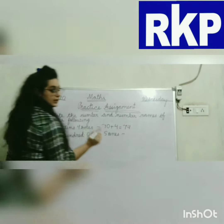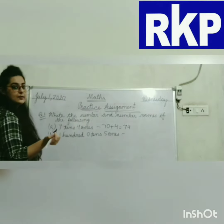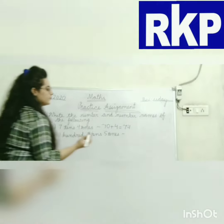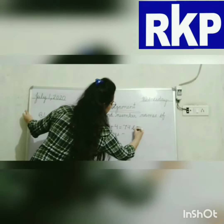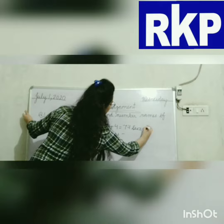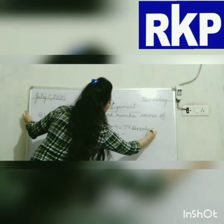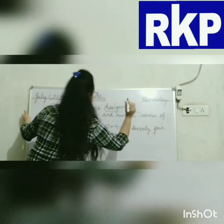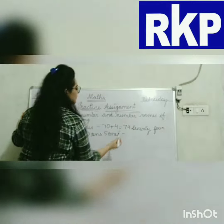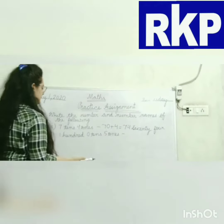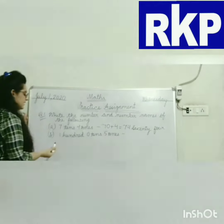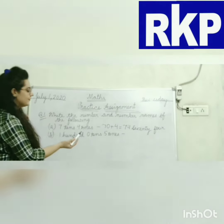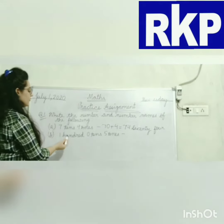Now, how will we write seventy-four in number name? Seventy — S-E-V-E-N-T-Y — seventy-four — F-O-U-R. The number is seventy-four. Next part: one hundred, zero tens, and five ones.